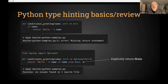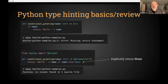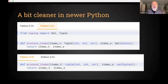The fix is to make sure you return a string, or change the annotation for the return value so it is Optional — meaning it might be None. You have to declare all the possibilities to satisfy the type checker.